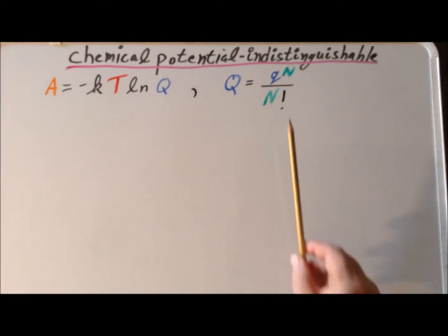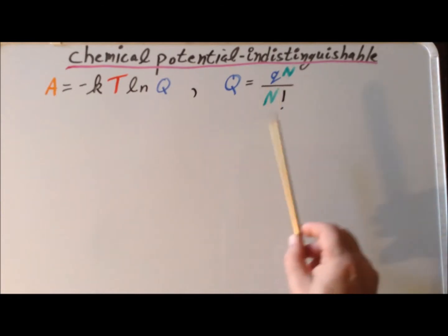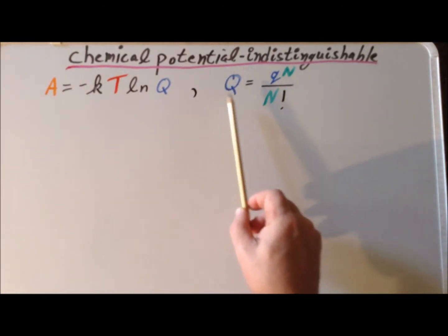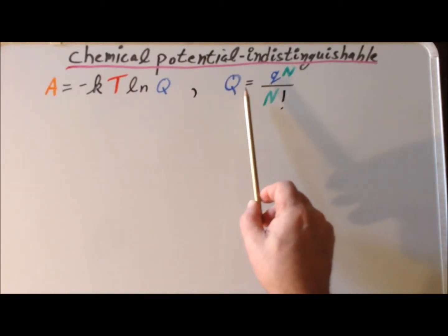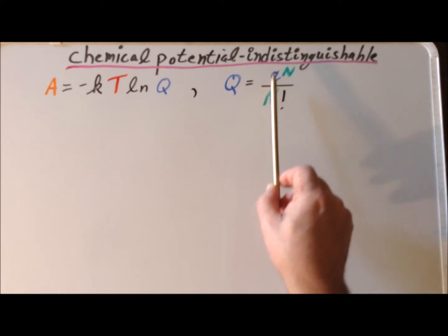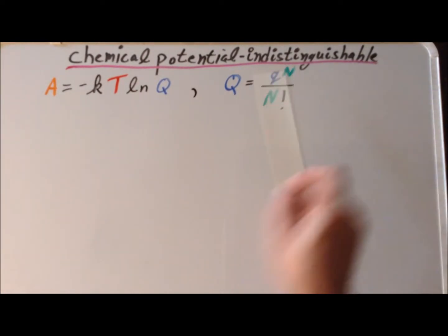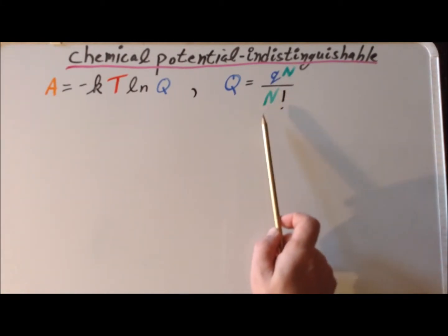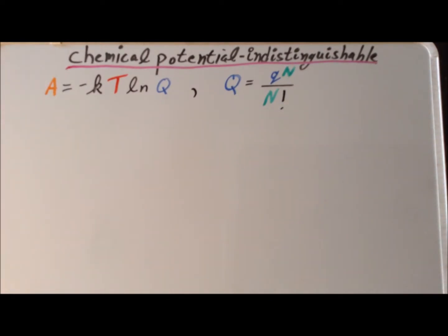Now suppose we have a system of N particles. If the particles were distinguishable, as for example in a crystal, then the canonical ensemble partition function big Q for the whole system would be equal to little q — the partition function for each particle — to the N-th power. But we have to divide this by N factorial, where N is the number of indistinguishable particles.